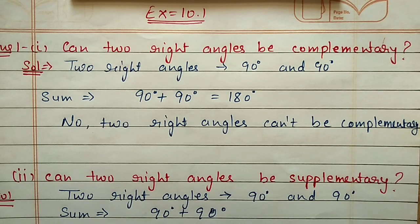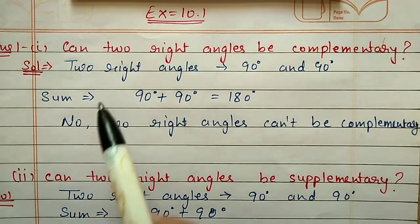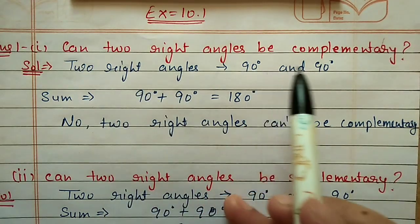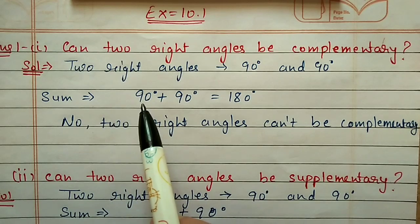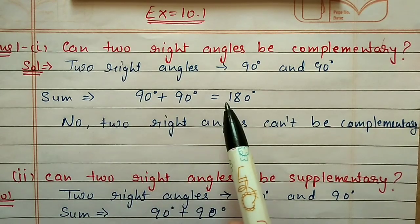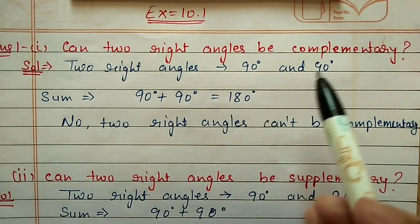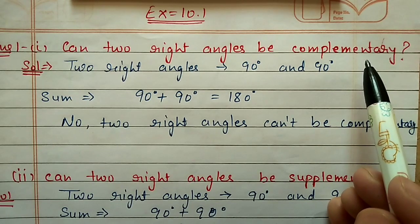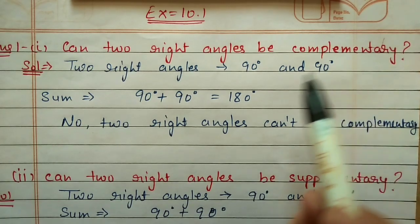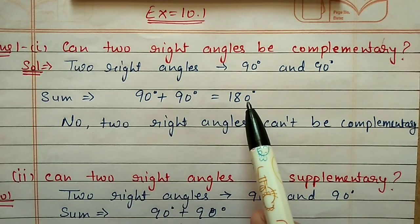Hello students, in this video we are discussing the first exercise of chapter Lines and Angles. Question number one: can two right angles be complementary? We have taken two right angles, 90 and 90. A right angle means 90 degrees. If we add these two right angles, 90 plus 90, we get 180. But the property of complementary angles is that the sum of two angles should be 90 degrees.